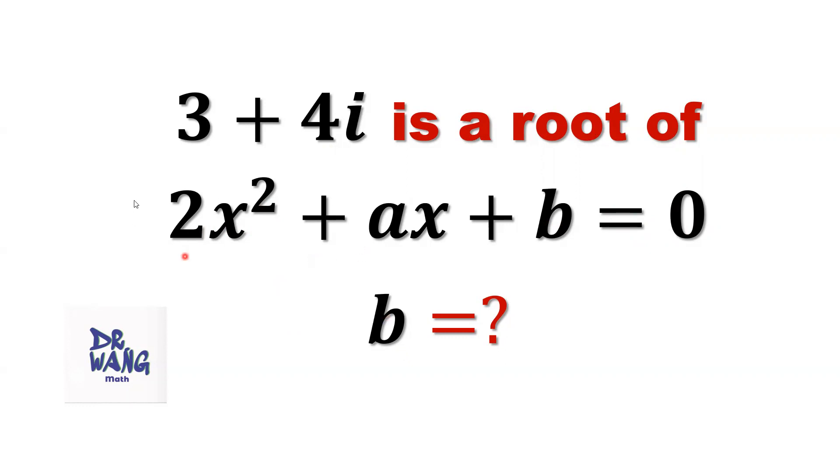This is a quadratic equation. One root is given. However, we have two parameters here. If you replace x by one root, we still cannot solve this equation for b because we have two parameters here. How to solve this kind of question?